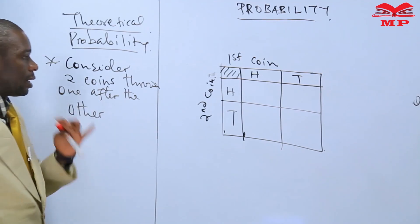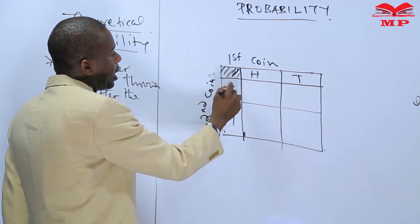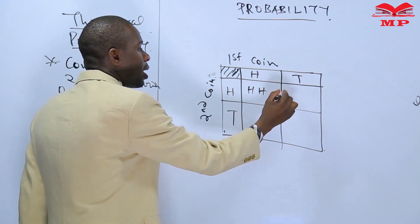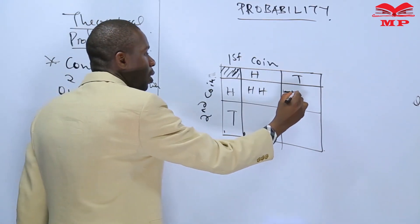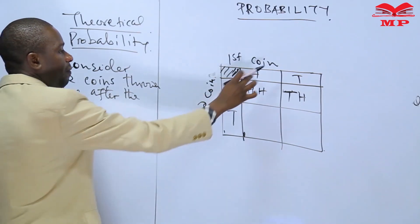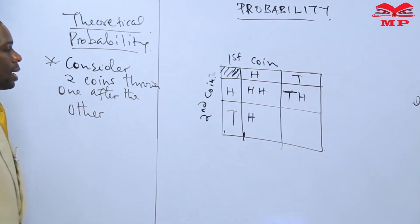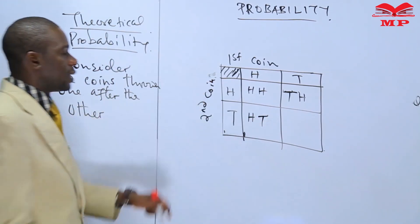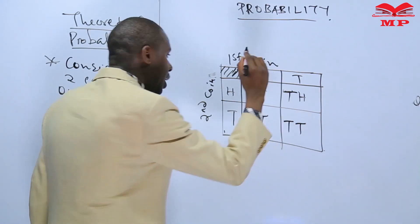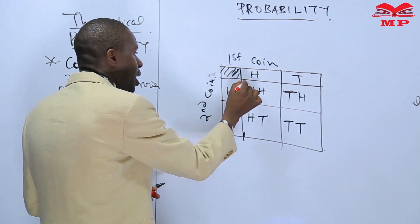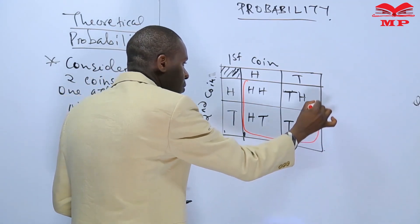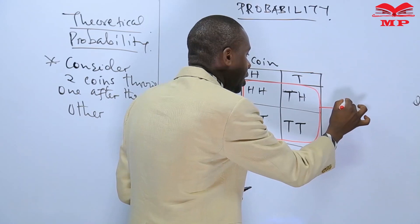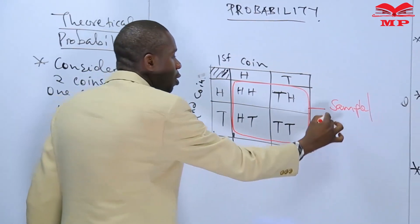We are considering two coins thrown one after the other. The first coin can give us a head and the second coin also gives us a head, or the first coin gives us a head and the second coin gives us a tail, or the first coin gives us a tail and the second coin gives us a tail as well. What I have surrounded is actually a sample space, also called a probability space.